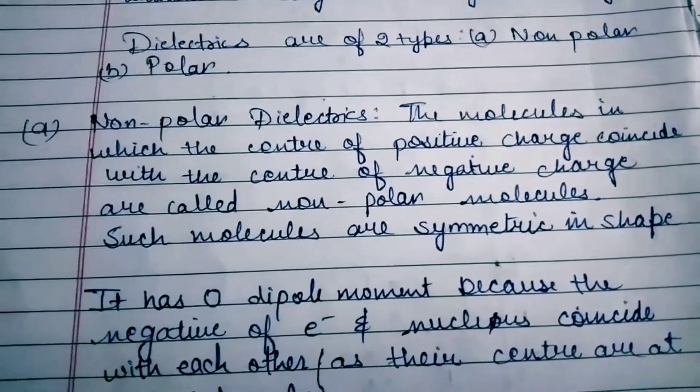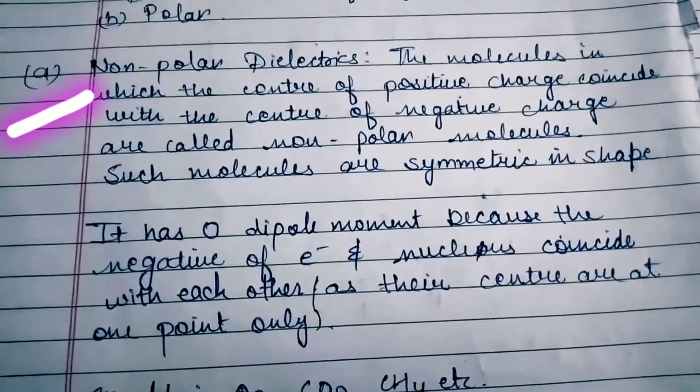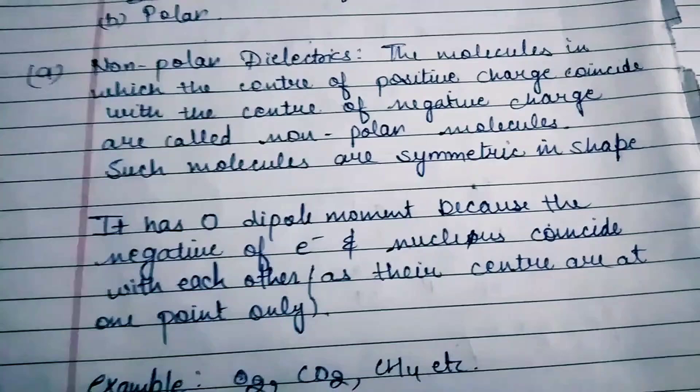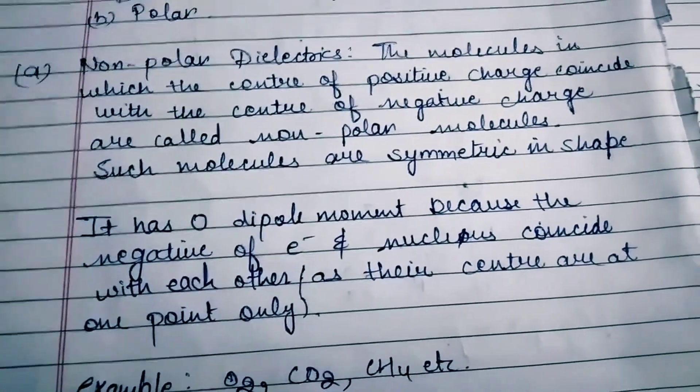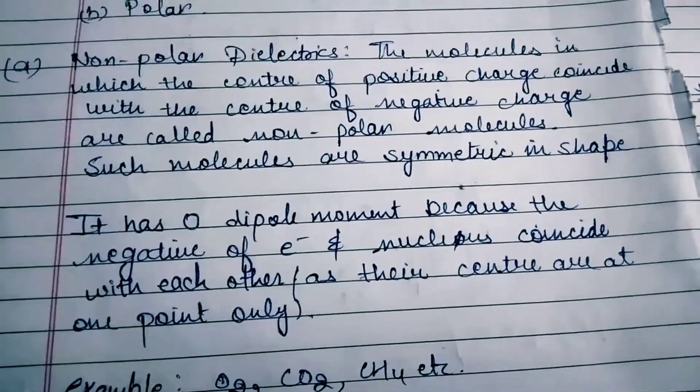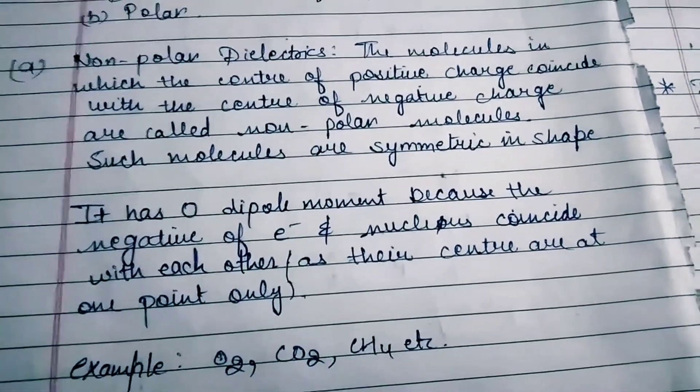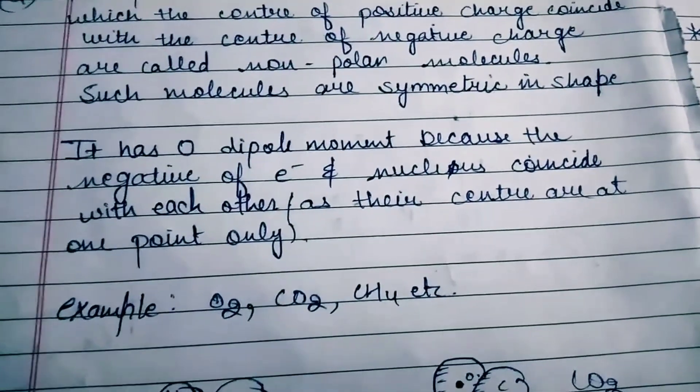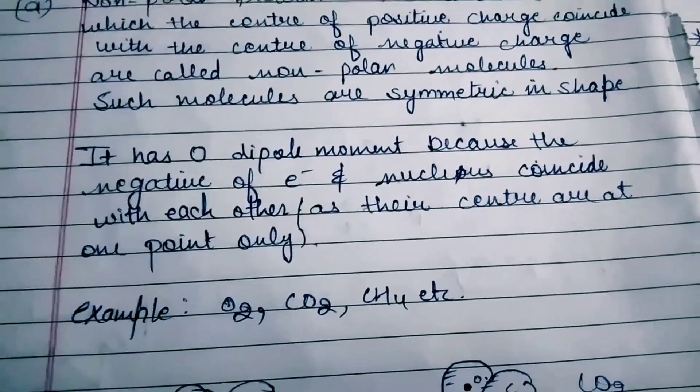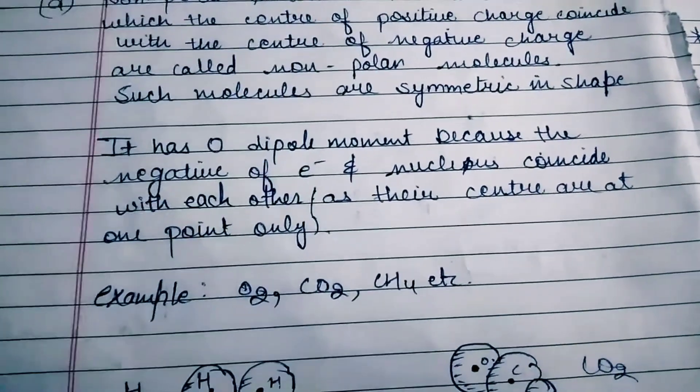Dielectrics are of two types: non-polar and polar. In non-polar dielectrics, the molecules have the center of positive charge coinciding with the center of negative charge. Such molecules are symmetric in shape. They have zero dipole moment because the centers are at one point only.